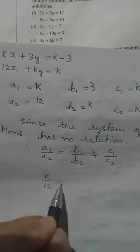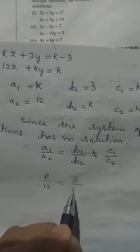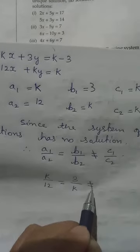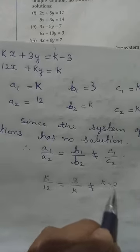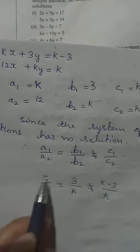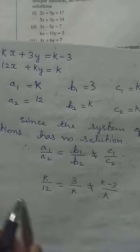So we have k/12 equal to b₁ equal to 3, b₂ equal to k, not equal to c₁ which is k minus 3 by c₂ which is k. We have parts which are equal and parts which are not equal.